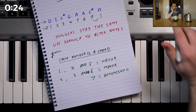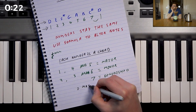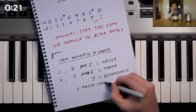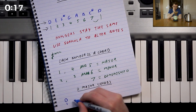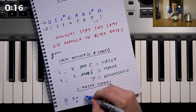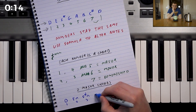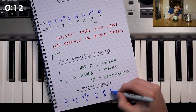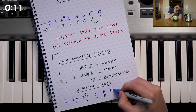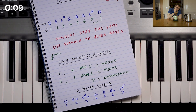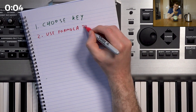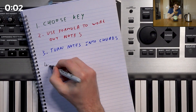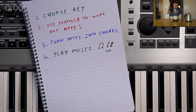Now we have everything we need to play a chord progression in the key of D major, and we know all our chords will work and sound good together. We have chord one, which is D major; two, which is E minor; three, which is F sharp minor; four, which is G major; five, which is A major; six, B minor; and seven, which is C sharp diminished. To work out the chords for any other key, simply choose the key, use the whole and half step relationship to work out the notes, turn those notes into chords using the numbers, and away you go.